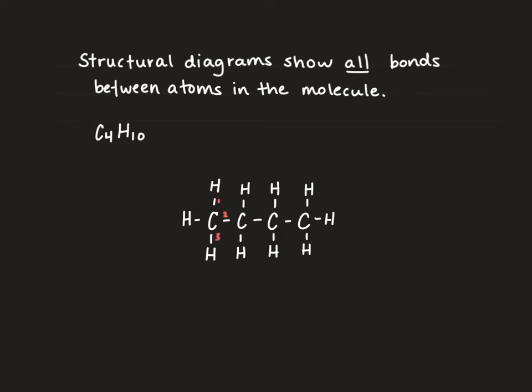So our end carbon atoms achieve four bonds with three hydrogens and our central carbon atoms achieve four bonds with two hydrogens. So that's a simple structural diagram of C4H10.